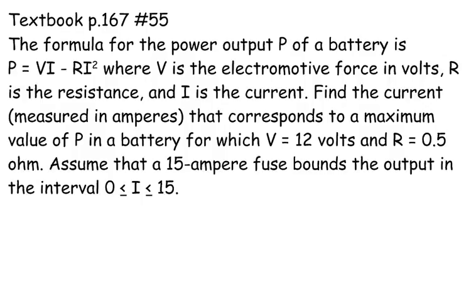All right, so as I'm reading this problem, here's what I'm thinking. It says find the current, so that means I is what I'm looking for. That corresponds to a maximum value of P. So when I see the words maximum value, I should be thinking max, an actual max. And when I think max, I should be thinking derivative equals zero. That's P prime equals zero. That's the thought process that should be going through my mind.